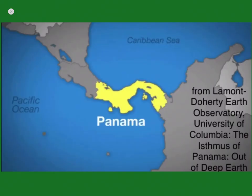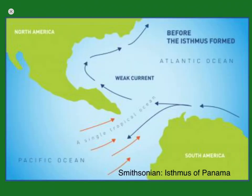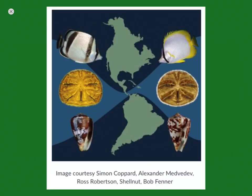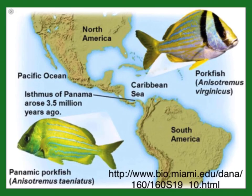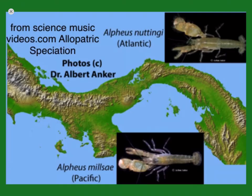An example of a geological barrier causing vicariance would be the Isthmus of Panama. The Pacific and Atlantic Oceans used to be connected when North and South America were separated from each other. There was one sea connecting them, and in that sea there were species of shrimp, fish, and other marine organisms. When North and South America joined together about 3 million years ago, the Isthmus of Panama formed a narrow strip of land between them, breaking all populations of marine species into two groups — the Atlantic group and the Pacific group. One species of shrimp that was separated into these two groups eventually became two species of shrimp, one on each side of the Isthmus.